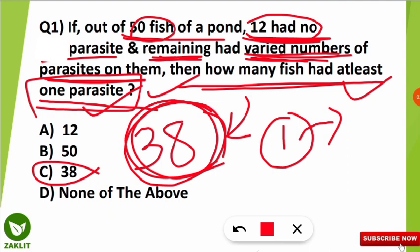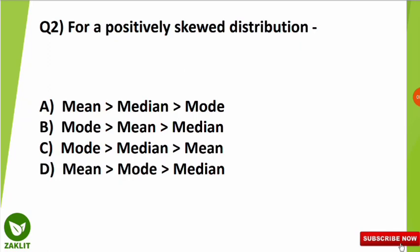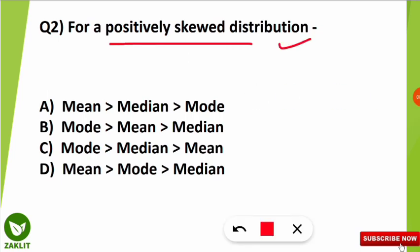This is a very simple question — even school students can solve it. If you know the concept clearly and read the question properly, you will be able to do this. Let's move to the second question. The second question is from the theoretical/conceptual part: for a positively skewed distribution, what is the relation between the mean, median, and mode?